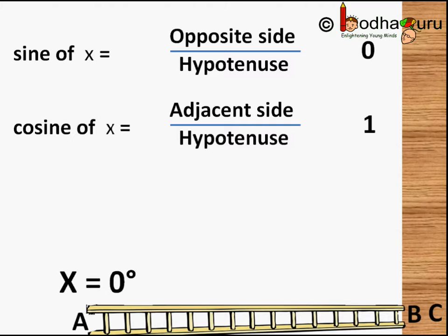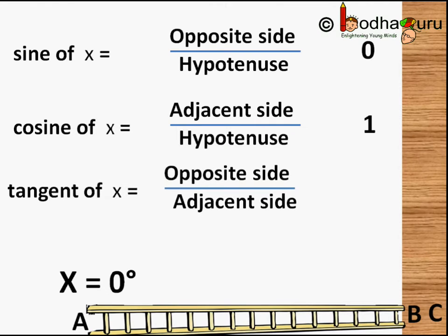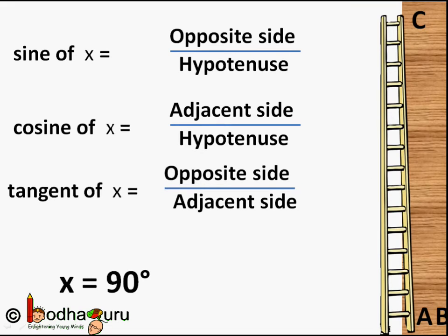So cos of 0 degrees will become 1. And tan of 0 degrees will be opposite side BC by adjacent side AB. The opposite side BC is 0, so 0 divided by adjacent side AB, which is the ladder size — 0 divided by something non-zero equals 0.